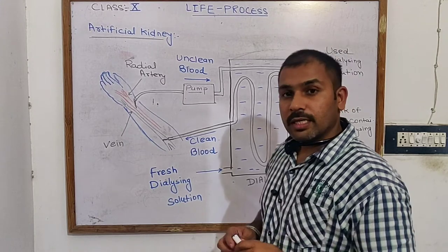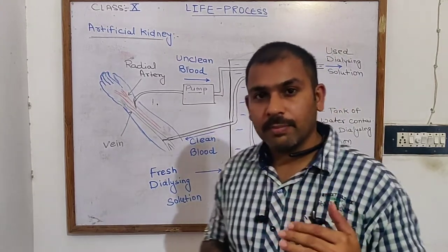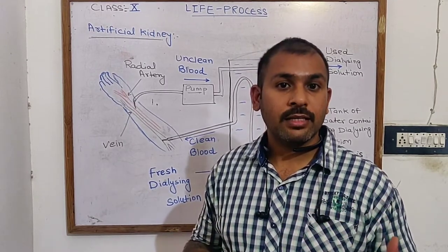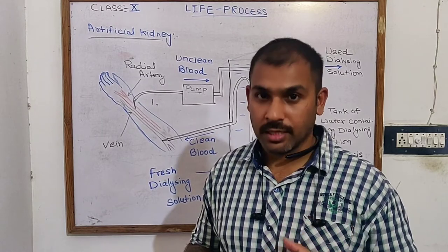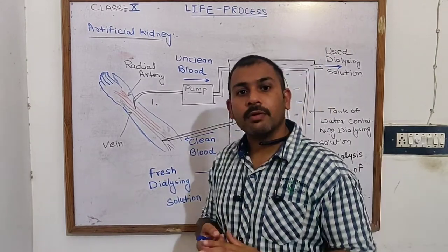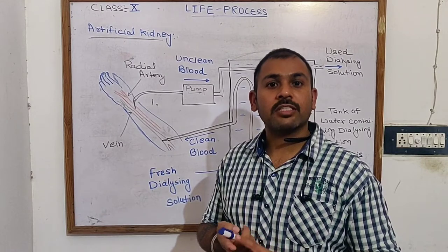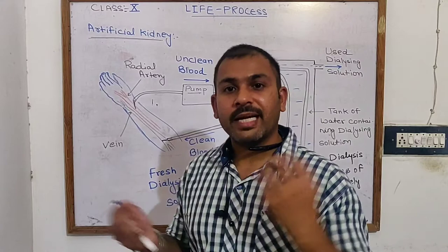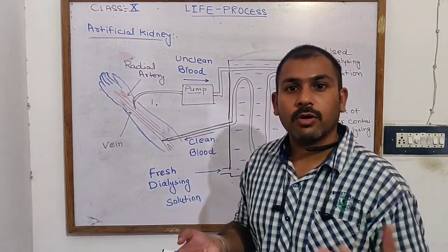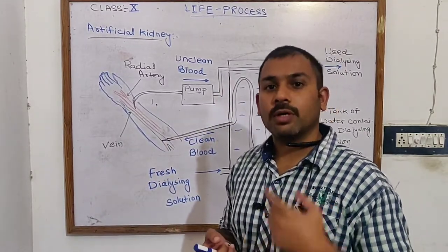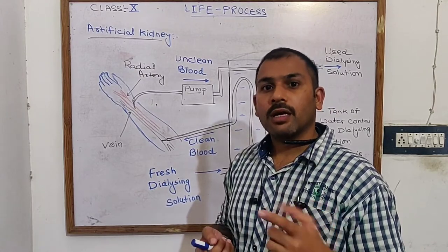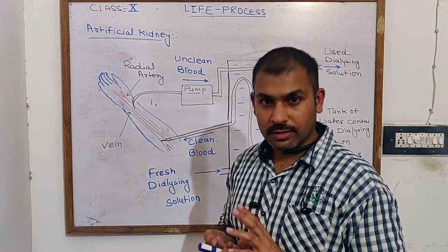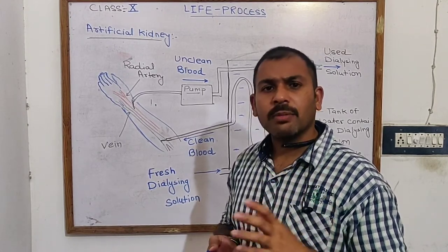What is the artificial kidney? First of all, the important thing is that our body produces excretory products. Our body produces nitrogenous waste. Nitrogenous waste means that when proteins break down, they produce nitrogenous waste, like ammonia, urea, and uric acid — all of these are nitrogenous waste.